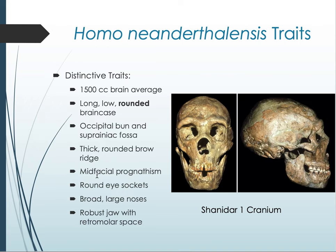Neanderthals have a thick, rounded brow ridge that curves over the eyes. Notice the mid-facial prognathism: the cheekbones are swept back because the full face is pulled forward. Mid-facial prognathism means the nose is also pulled forward, and the nasal cavities are extremely large. One theory is that the larger nasal cavity humidified and warmed air from the arctic environment so it wouldn't damage brain cells, which is why this species had such large nasal cavities, ultimately requiring the face to be pulled forward to stabilize the nose.